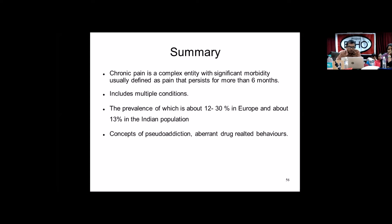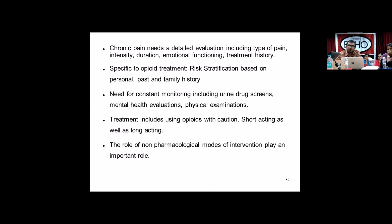In summary, chronic pain is primarily a complex entity with significant morbidity, usually defined as pain persisting more than 6 months, with a prevalence of about 12-30% globally and 13% in the Indian population. Chronic pain needs detailed evaluation including type, intensity, duration, emotional functioning, and treatment history. Opioid treatment requires risk stratification, constant monitoring including urine drug screens and mental health evaluations, and the role of non-pharmacological modes of intervention plays an important role.